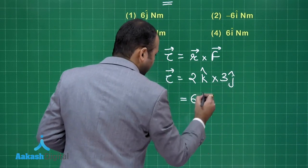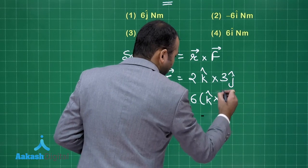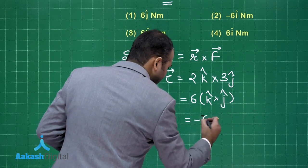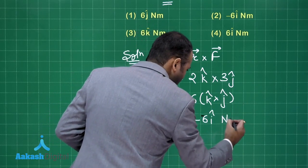So this equals 6k cap cross j cap, that equals minus 6i cap Newton meter. This is the torque.